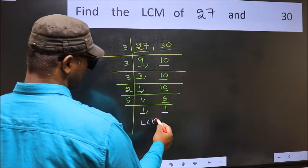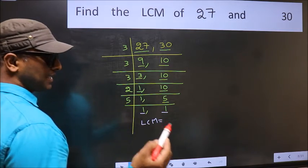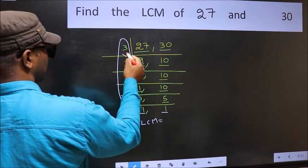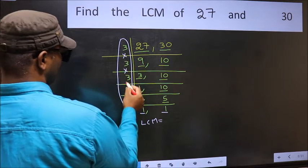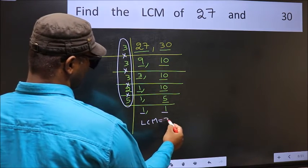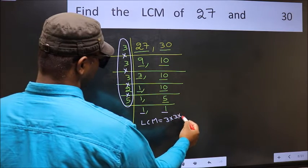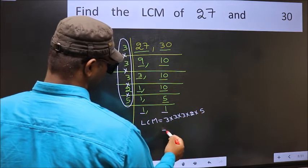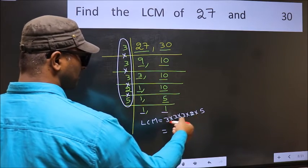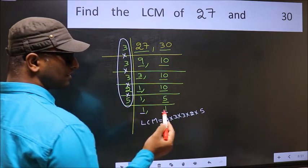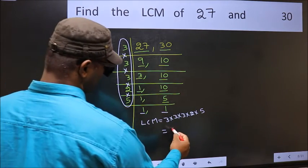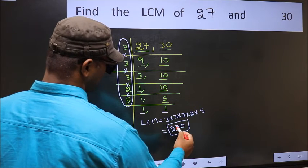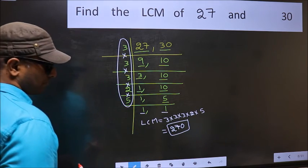So our LCM is the product of these numbers. That is 3 × 3 × 3 × 2 × 5. When we multiply these numbers, we get 270. So 270 is our LCM.